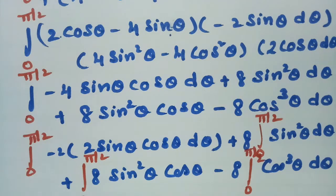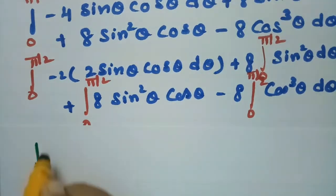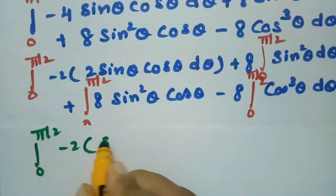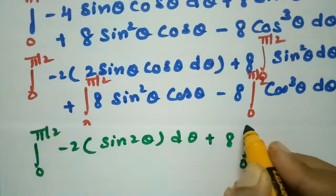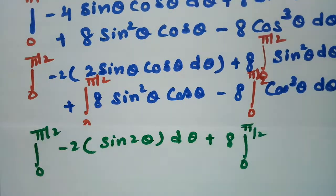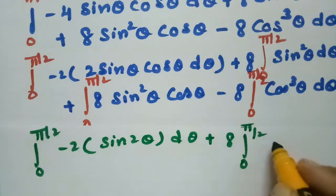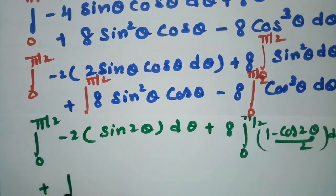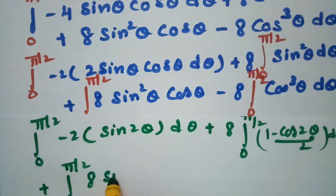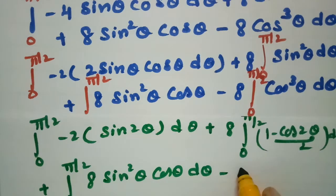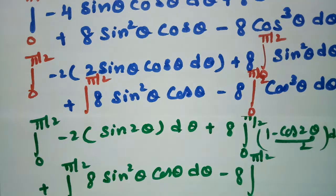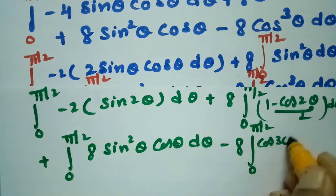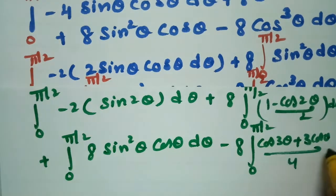Substituting all these formulae: the integral from 0 to π/2 of minus 2 times sin 2θ dθ, plus 8 times the integral from 0 to π/2 of (1 minus cos 2θ)/2 dθ, plus 8 times the integral from 0 to π/2 of sin² θ cos θ dθ, minus 8 times the integral from 0 to π/2 of (cos 3θ plus 3 cos θ)/4 dθ.